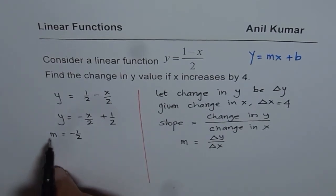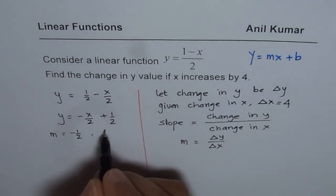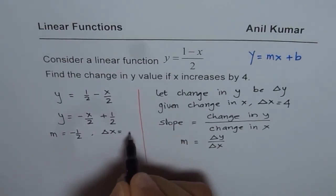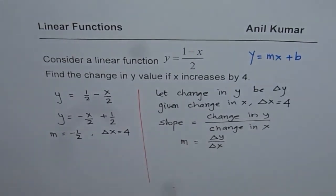Now we know slope is minus half and we also know change in x is 4. So we can find what change in y is. So let me derive the formula here itself. Change in y equals m times change in x, correct?